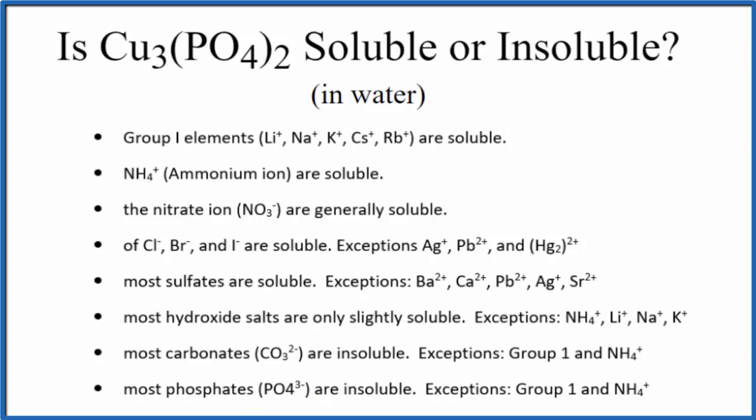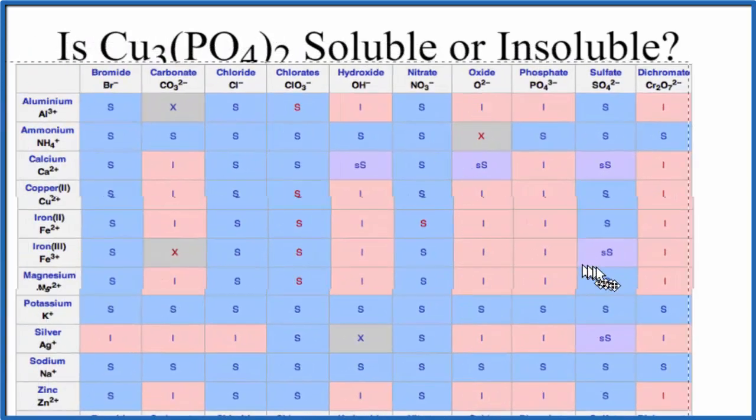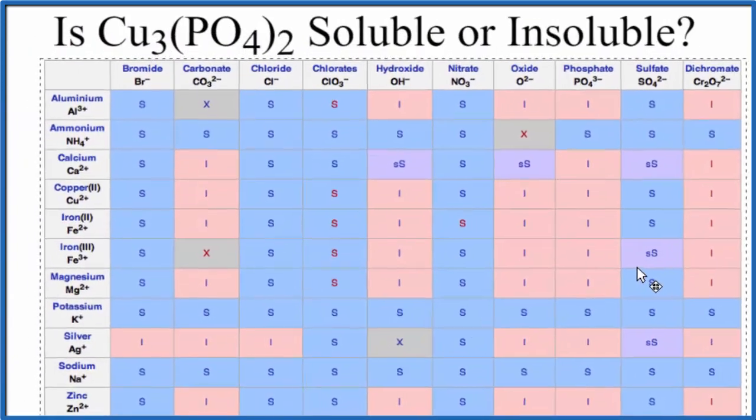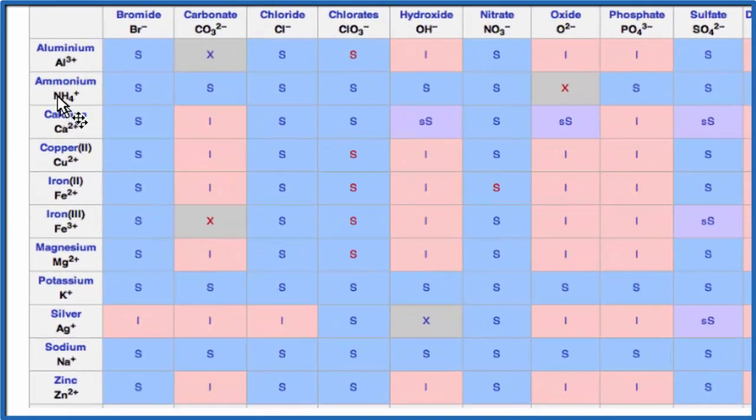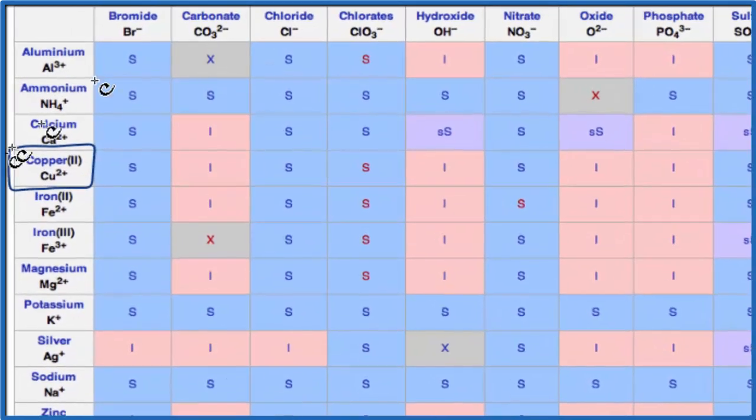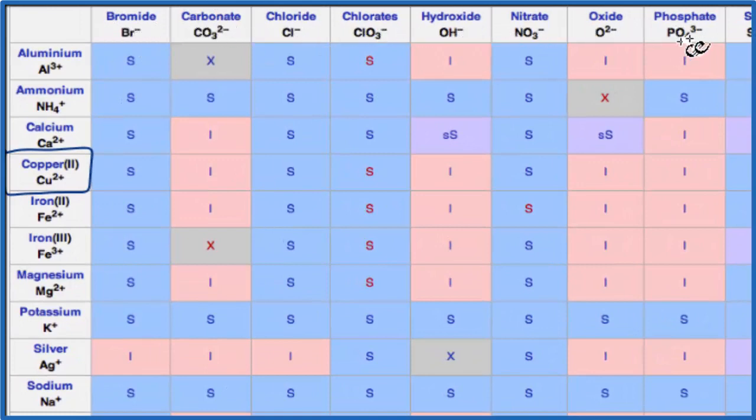We could also look at a solubility chart. So here is a solubility chart, and we're looking for copper 2, right here. Cu2+, and then the phosphate, that's over here, PO4 3-.